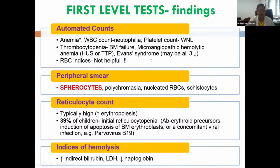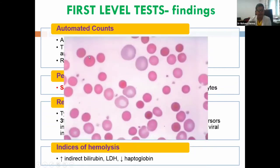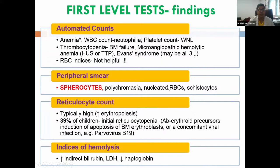Looking at the peripheral smear, the classical finding is microspherocytes — RBCs that are smaller in size compared to small lymphocytes, very sphere-like, with nearly lost central pallor. Apart from microspherocytes, you can see polychromasia, nucleated RBCs, and schistocytes.